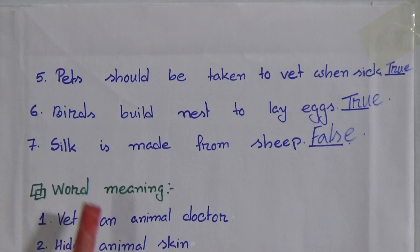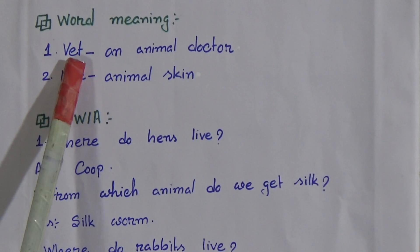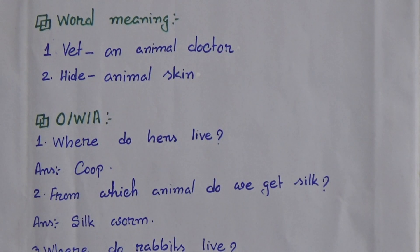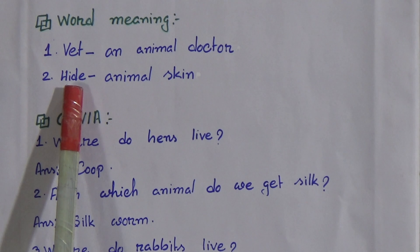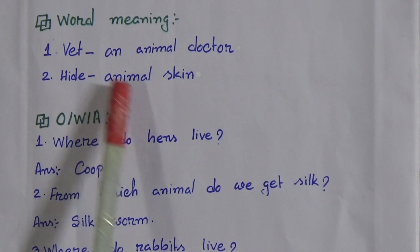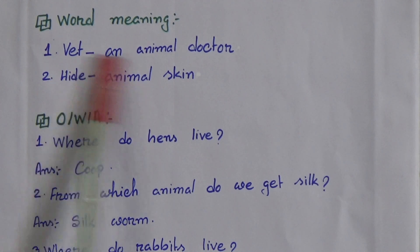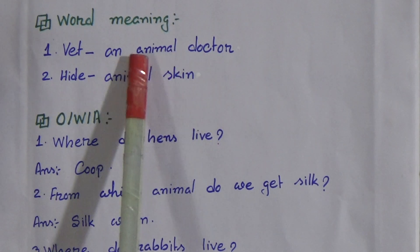Now we learn word meaning. Number 1: Vet — V-E-T — means veterinary surgeon, that is, an animal doctor who treats only animals and birds. Number 2: Hide — H-I-D-E — means animal skin.